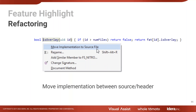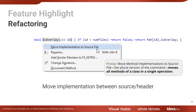Move Implementation Between Source and Header is something everyone does all the time. It's nice to have stuff in the source, or if it's large, throw it in the header if you want it to be compiled inline. Being able to move things back and forth is certainly a necessity, and we make it easy and very quick.